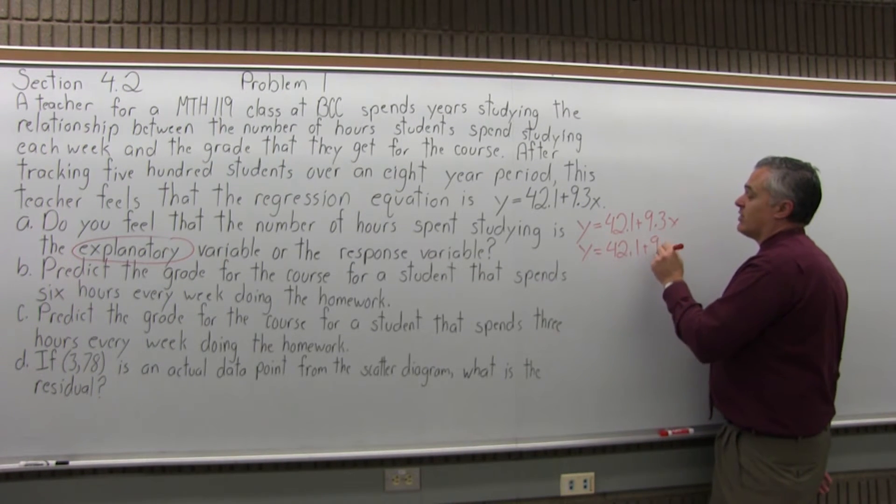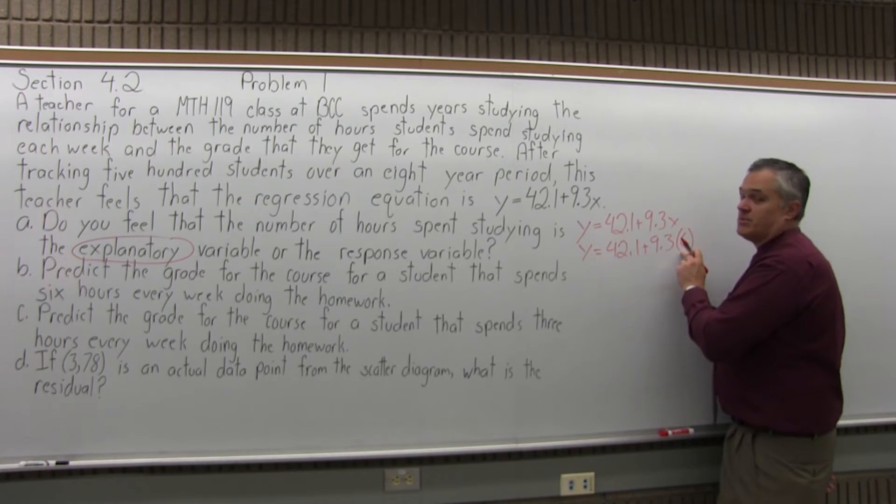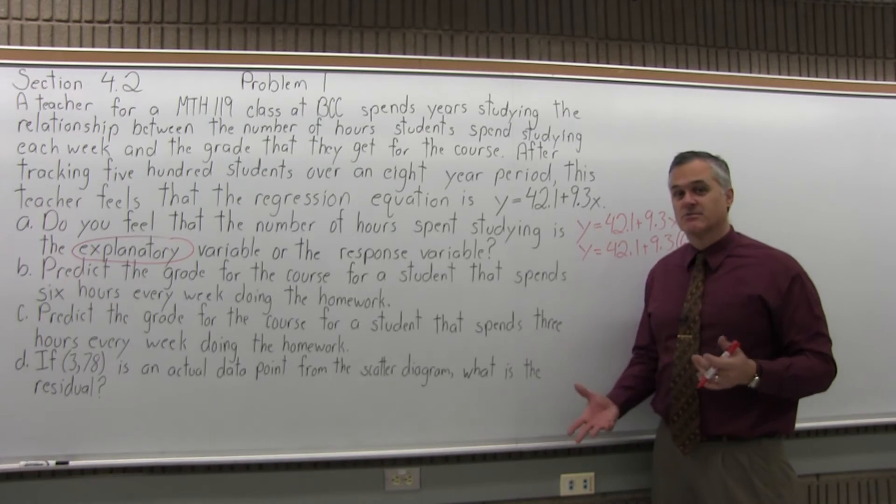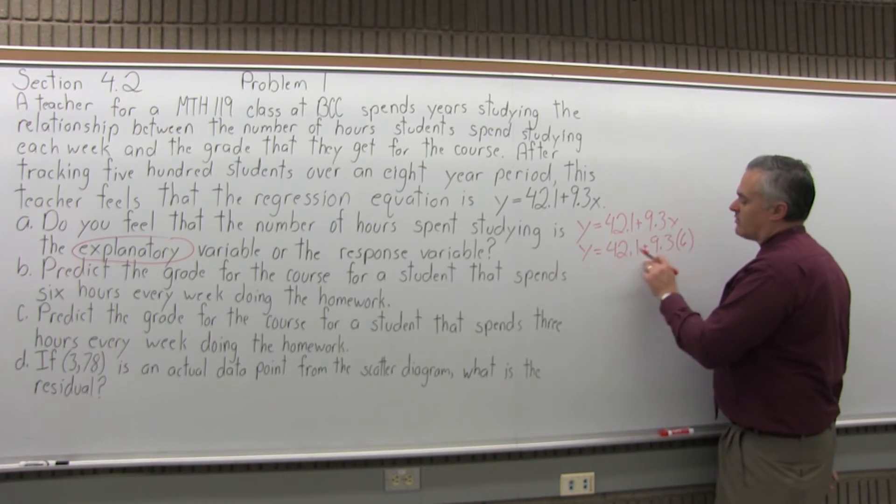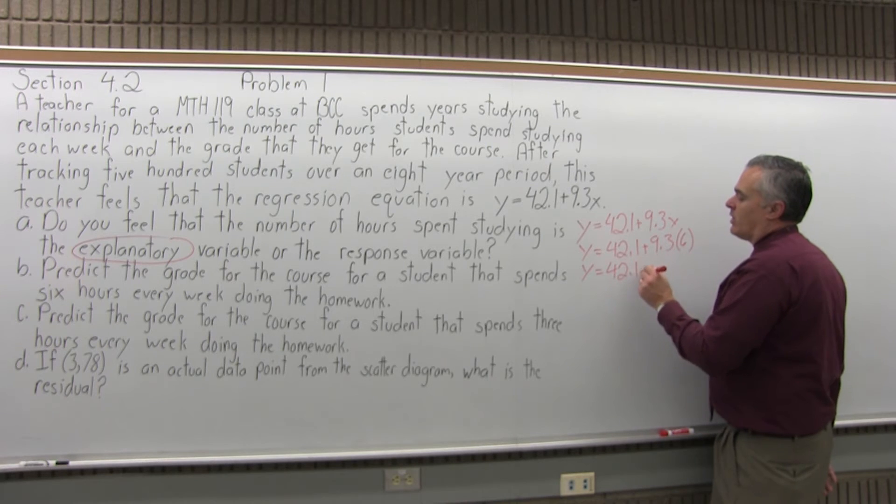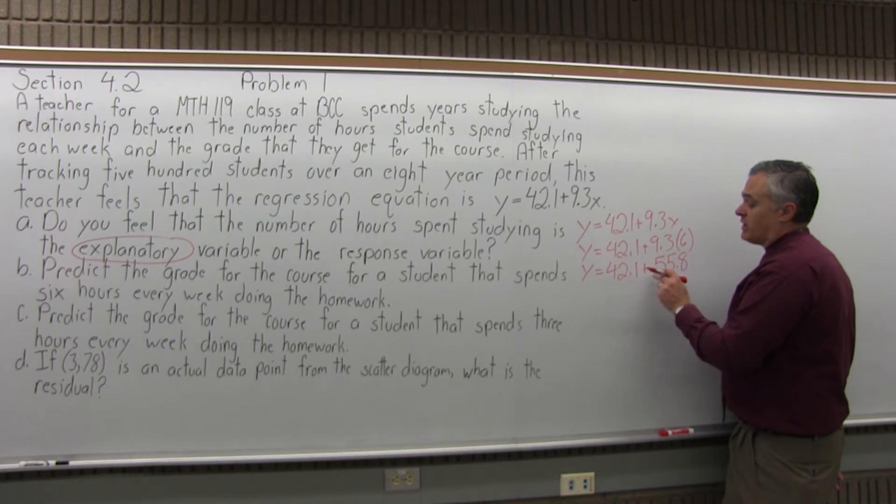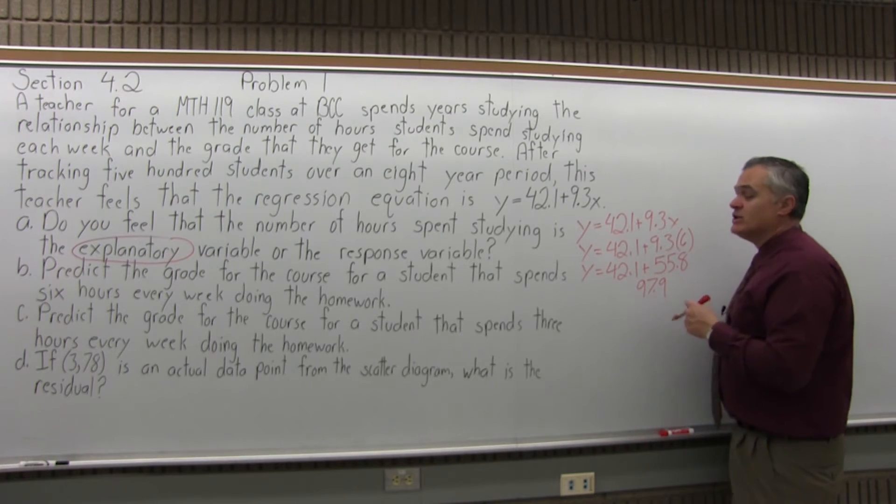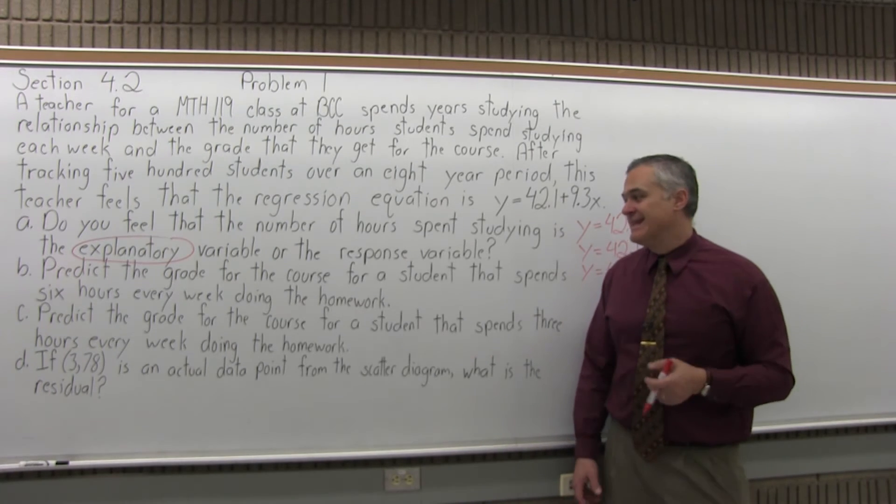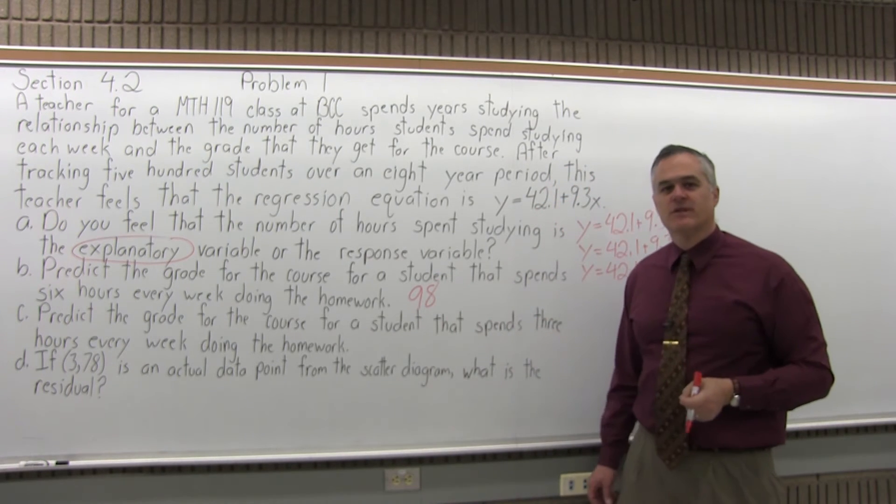42.1 plus 9.3 times six. Now, remember, if you have an addition and a multiplication, you must do the multiplication first. That's simply the order of operations. You can't, even though going from left to right the add is written first, you must multiply first. So Y would equal 42.1 plus 9.3 times six is 55.8. And now if you add 42.1 plus 55.8, the answer comes out to 97.9. So that student would get a good strong A. Rounding that off, that's a 98 average for the class. So six hours a week would get you a good grade for this class.